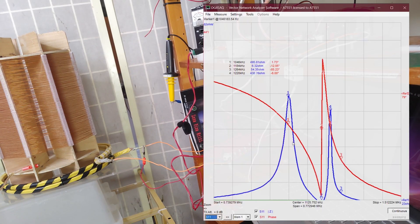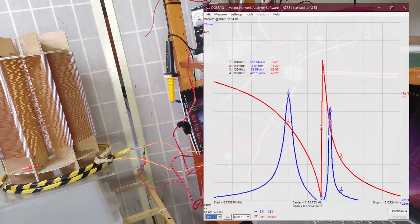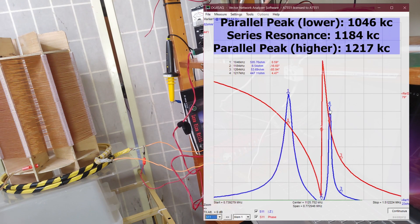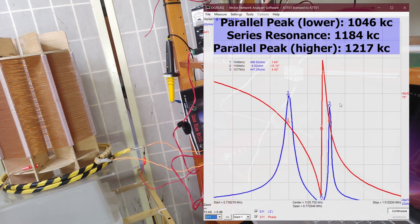Before I shift the coil up, I wanted to check how it is as I've been running it, just laying flat like this. The first parallel mode resonant peak is at 1046 kilocycles. Marker 2 represents the series mode resonant point at 1184 kilocycles. And marker 3 shows the higher resonant peak, the parallel mode LMD resonance point at 1217 kilocycles.